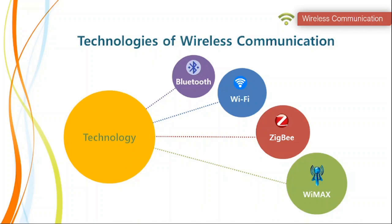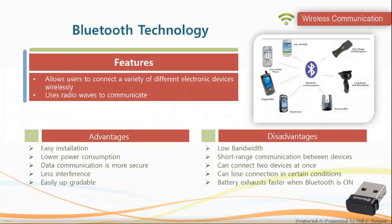Wireless communication technologies — Bluetooth, Wi-Fi, ZigBee, and WiMAX — are the common technologies of wireless communication. Bluetooth technology allows connecting a variety of different electronic devices wirelessly for the transfer and sharing of data using radio waves. Advantages of Bluetooth technology are easy installation, lower power consumption, secure data communication, less interference, and easily upgradable. Disadvantages include low bandwidth, short range communication, the ability to connect only two devices at once, possible connection loss in certain conditions, and faster battery drain when Bluetooth is on.